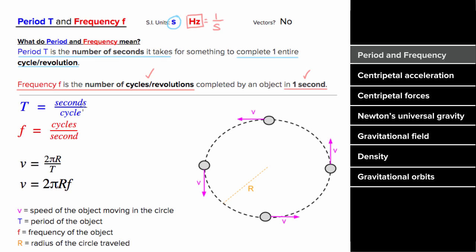Because the period and frequency are defined in this inverse way — as seconds per cycle or cycles per second — each one is just the inverse of the other. In other words, the period is just one over the frequency, and the frequency is equal to one over the period.